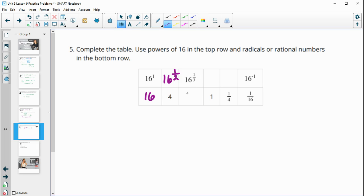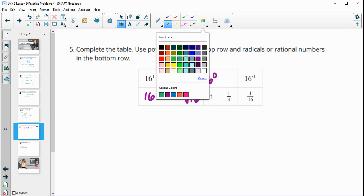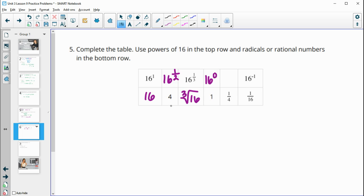Then this one to the 1 third power will be the third root of 16, which isn't a nice number, so we'll just leave it as a radical. Anything to the 0 power is 1. Then we recognize that 4 and 1 fourth are reciprocals of each other. So that means we're going to have the negative exponent of this one.